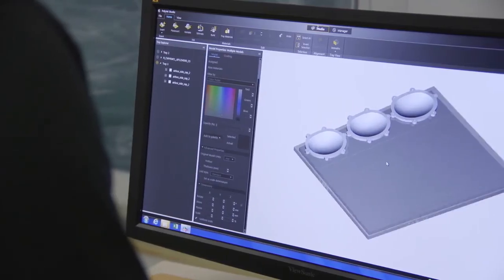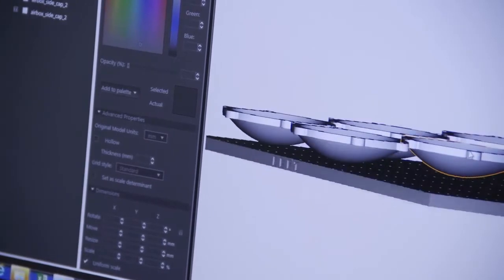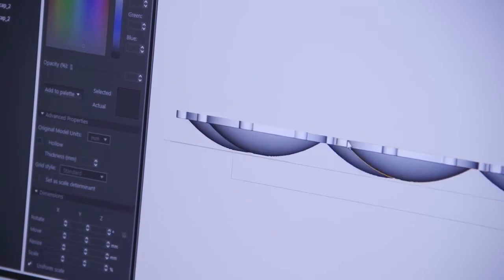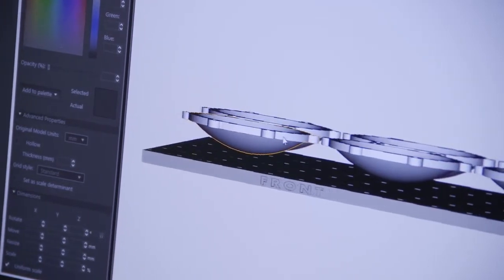If the parts on the tray are different sizes, try to orient them so that their z-height is as similar as possible. This is to reduce overexposure of the clear material, which can cause yellow discoloration.